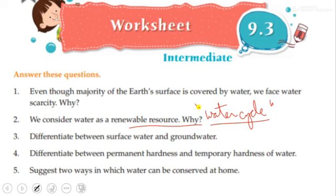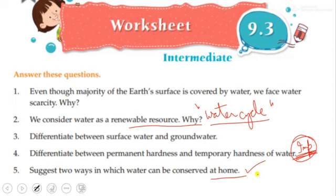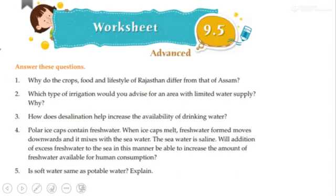Differentiating between permanent and temporary hardness of water is very important — please make sure you learn it. I have discussed it many times; you can refer to the video. For two ways to conserve water at home: one is rooftop rainwater harvesting, and the other is minimum use of water. Please write a full explanation with a diagram for rooftop water harvesting.